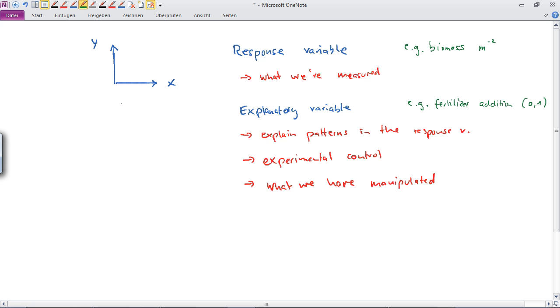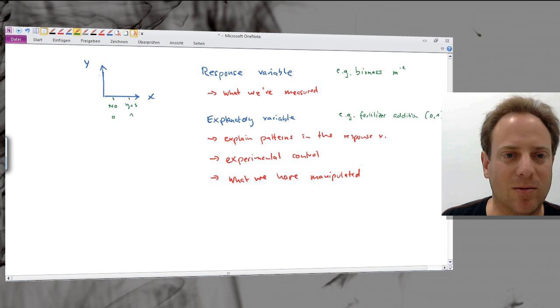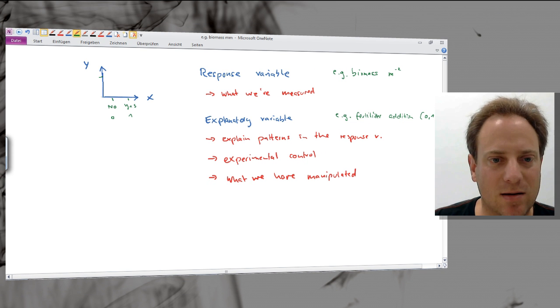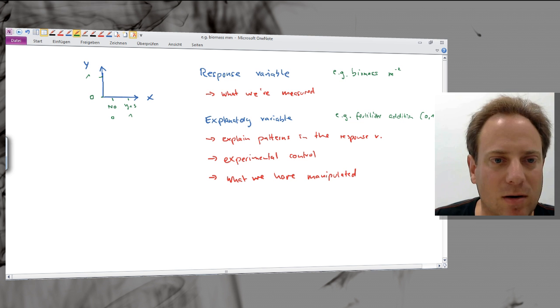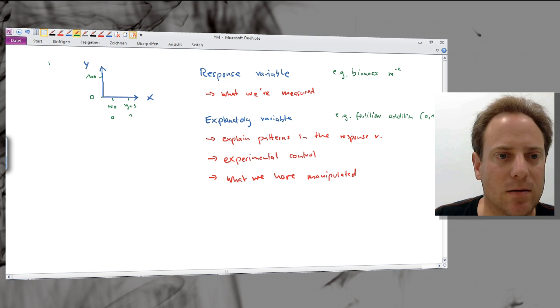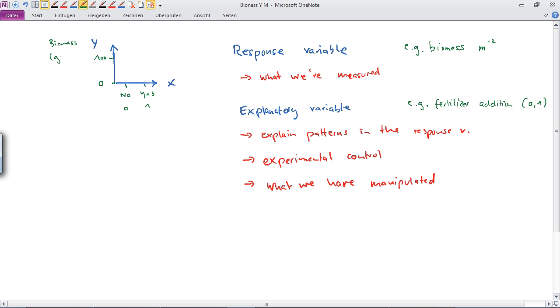So on the xy plane it would look like that. The fertilizer addition would come on the x-axis with no and yes, or 0 and 1, and the biomass in grams per square meter would be shown on the y-axis. For example, no biomass at all or 100 grams per square meter, and the unit of biomass would be grams per square meter.